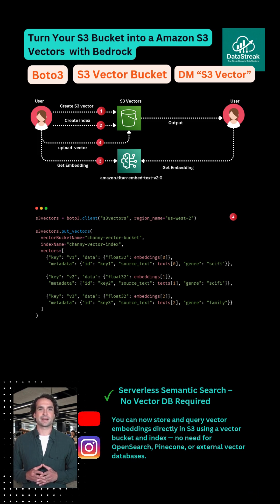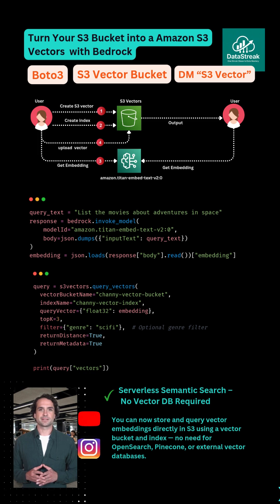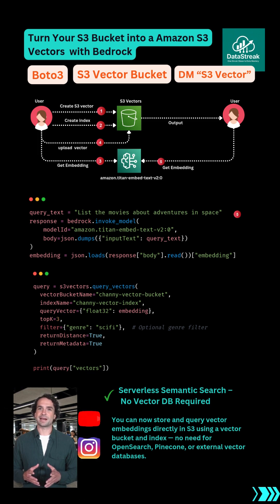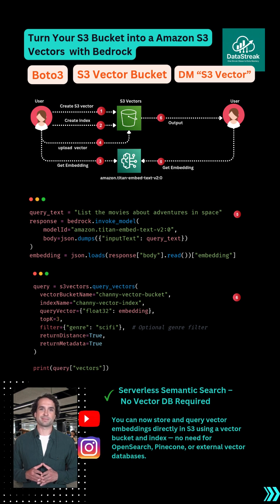Now let's say a user asks: list the movies about adventures in space. We turn that query into a vector and ask S3 for the closest semantic match. And boom — you get the top three closest results, sorted by semantic similarity.